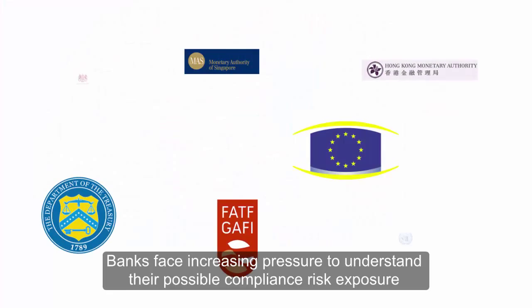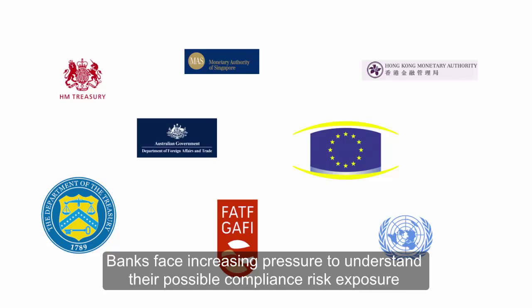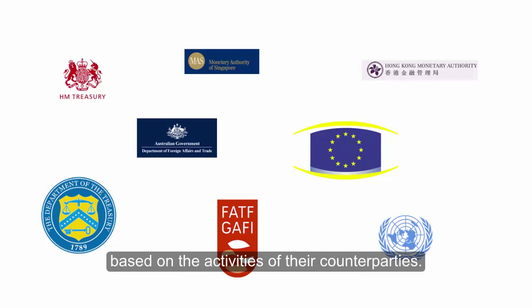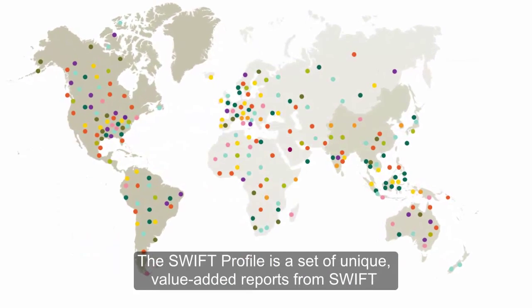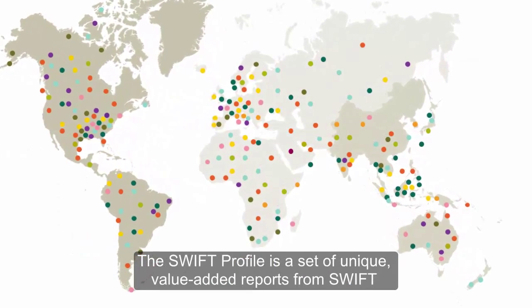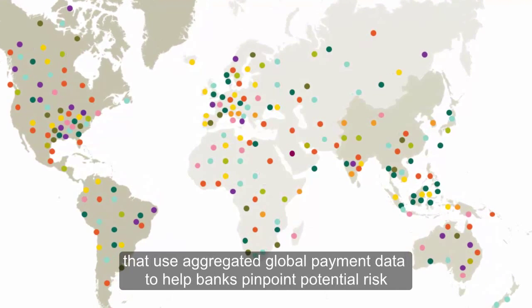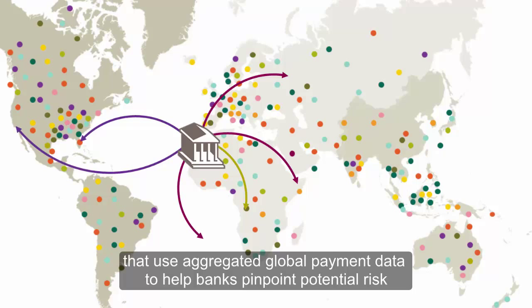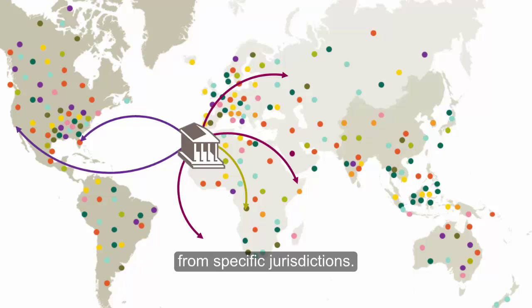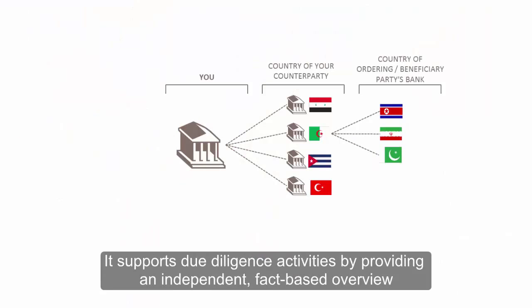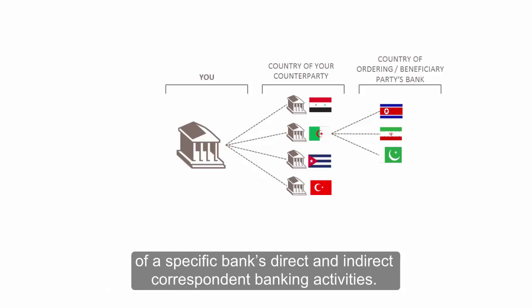Banks face increasing pressure to understand their possible compliance risk exposure based on the activities of their counterparties. The SWIFT profile is a set of unique value-added reports from SWIFT that use aggregated global payment data to help banks pinpoint potential risk from specific jurisdictions. It supports due diligence activities by providing an independent, fact-based overview of a specific bank's direct and indirect correspondent banking activities.